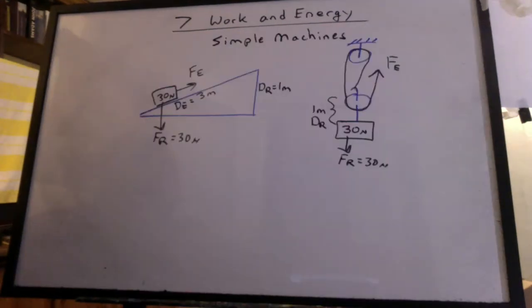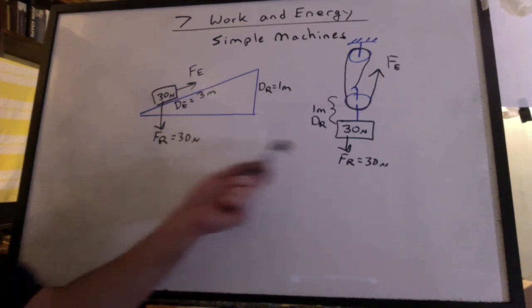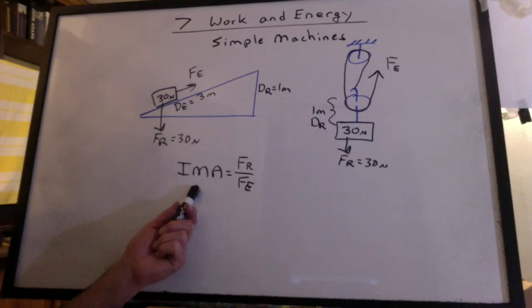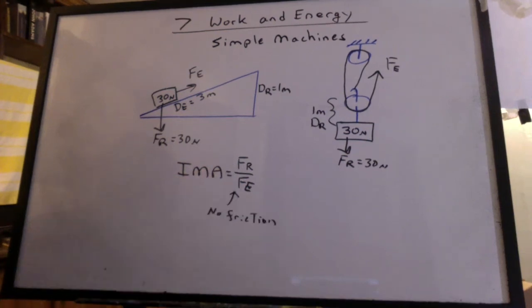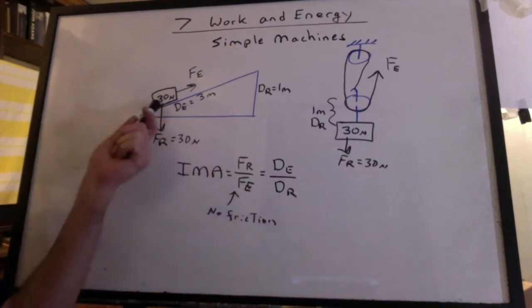And we've done many problems on simple machines. We had plenty of labs on this stuff. Here's an example with an incline plane and a pulley system. What do you notice about the IMA for each one? This tells us, ideally, how much stronger the machine makes them. How much more we can lift compared to what we're pulling. But that's only if there's no friction. So we should use the distances because the distances won't change whether or not there's friction.